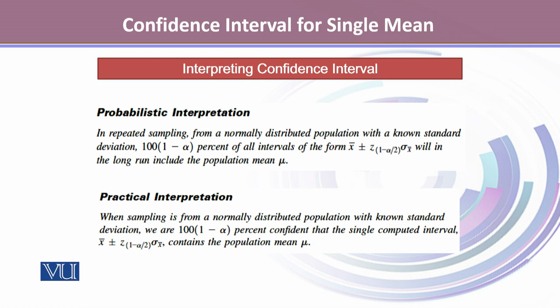The practical interpretation is: when sampling from a normally distributed population with known standard deviation, we are 100(1-α)% confident that a single computed interval contains μ.